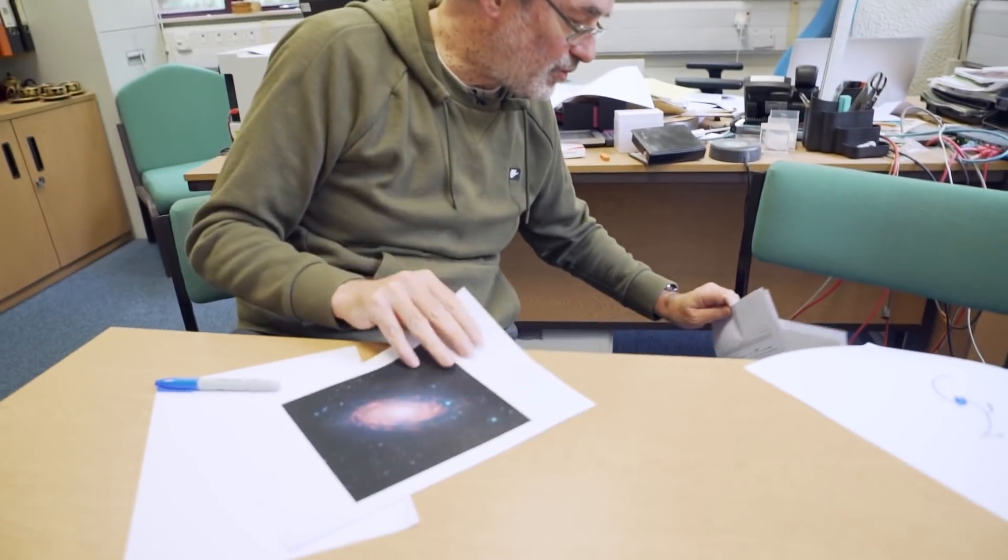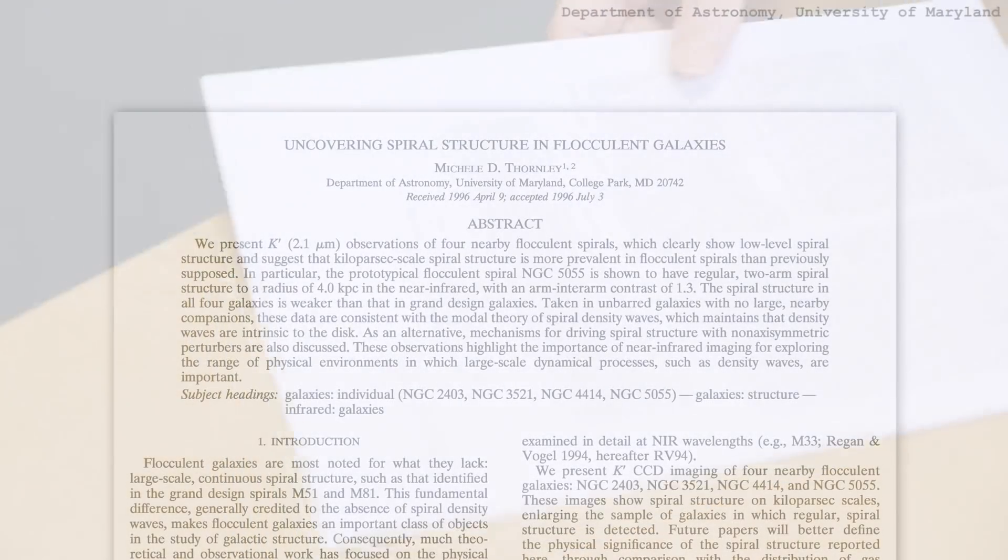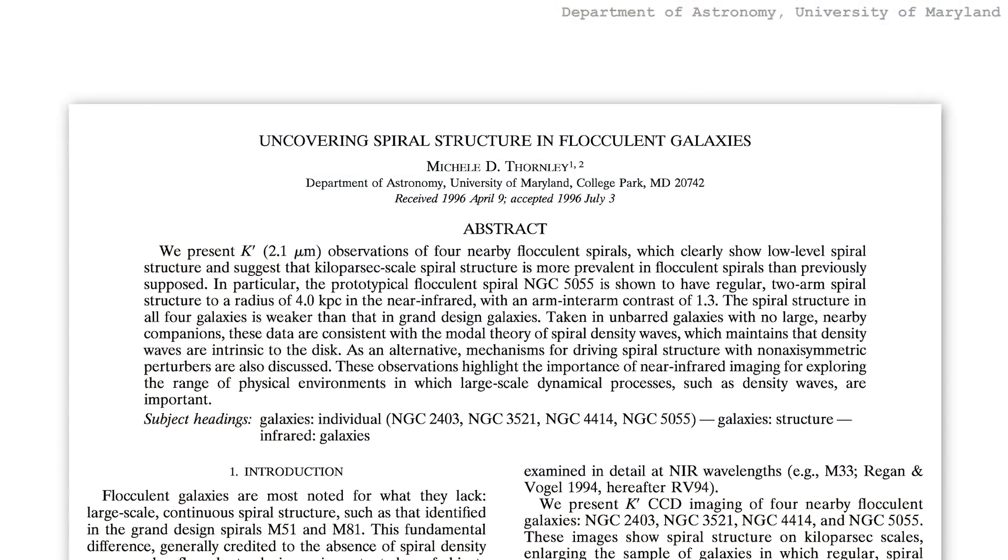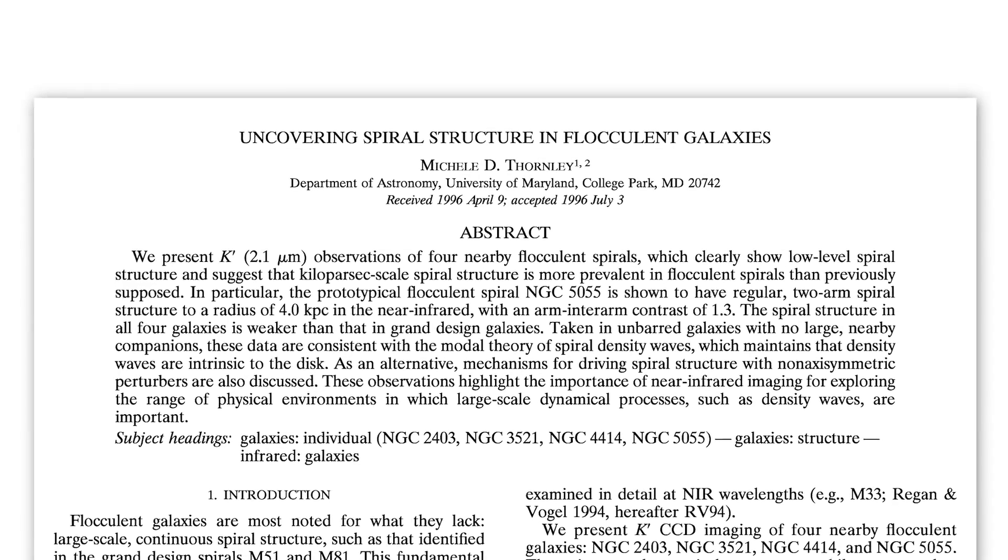So somewhere I have a near infrared picture of this galaxy. Yeah, here we go. The title of this is Uncovering Spiral Structure in Flocculent Galaxies. Messier 63 is a classic example of a flocculent galaxy, and sure enough, it's one of the ones that made it into their sample. And they looked in the near infrared, and here's their picture of it.